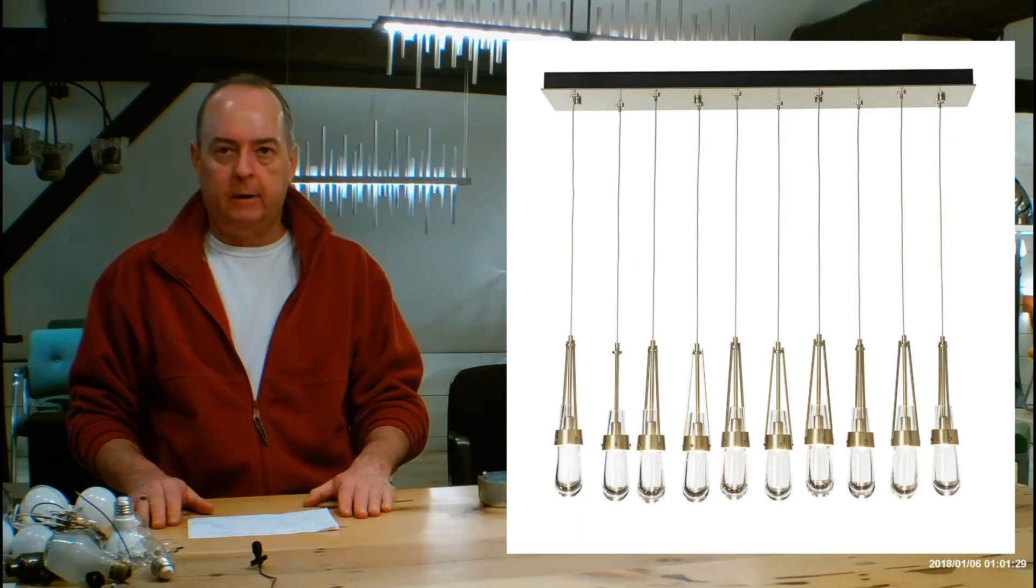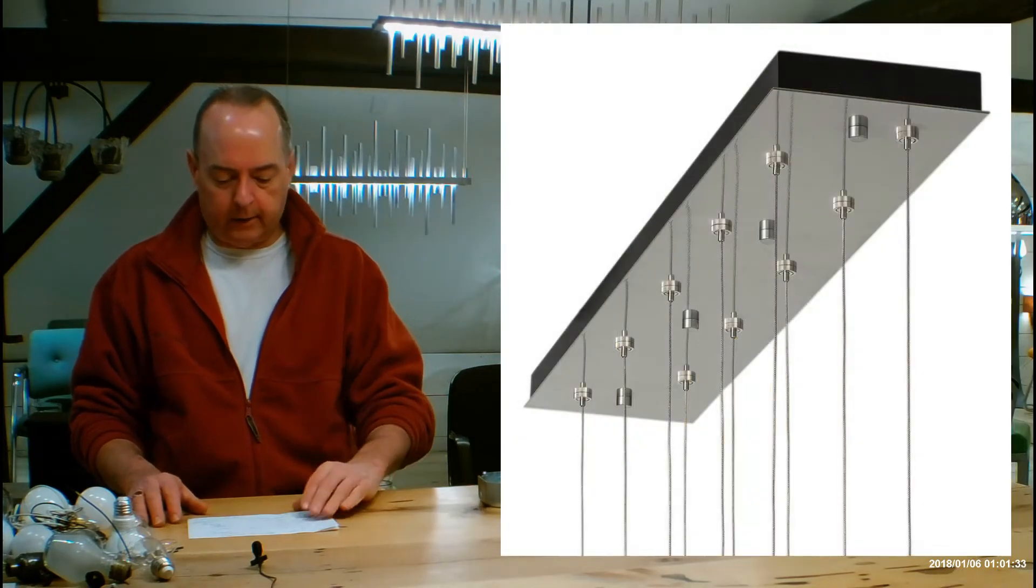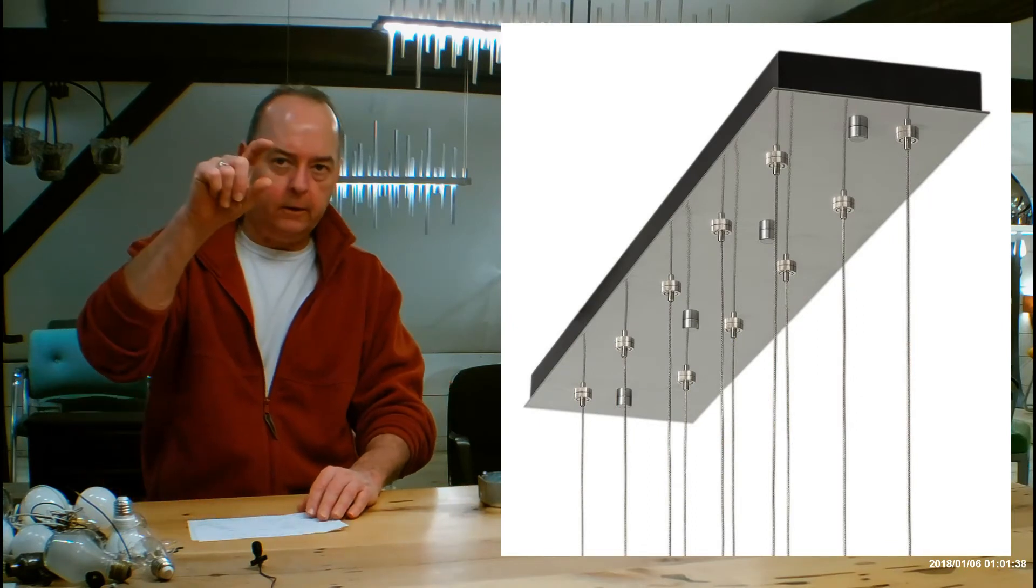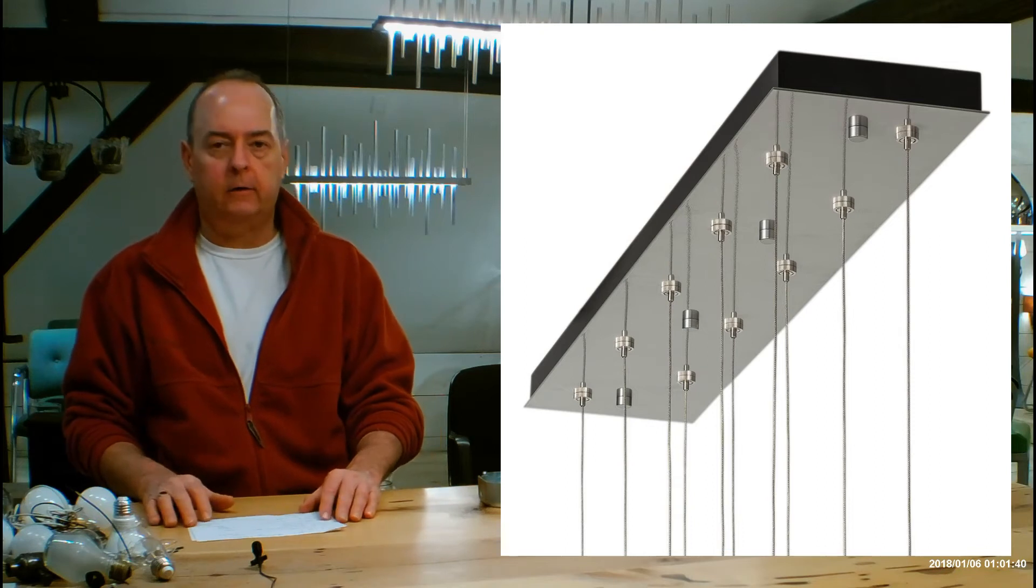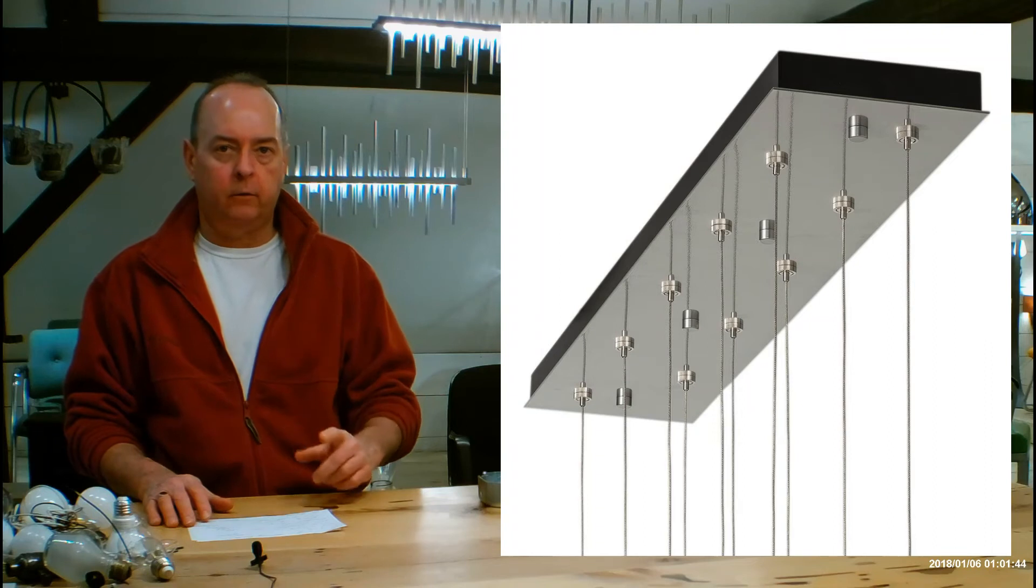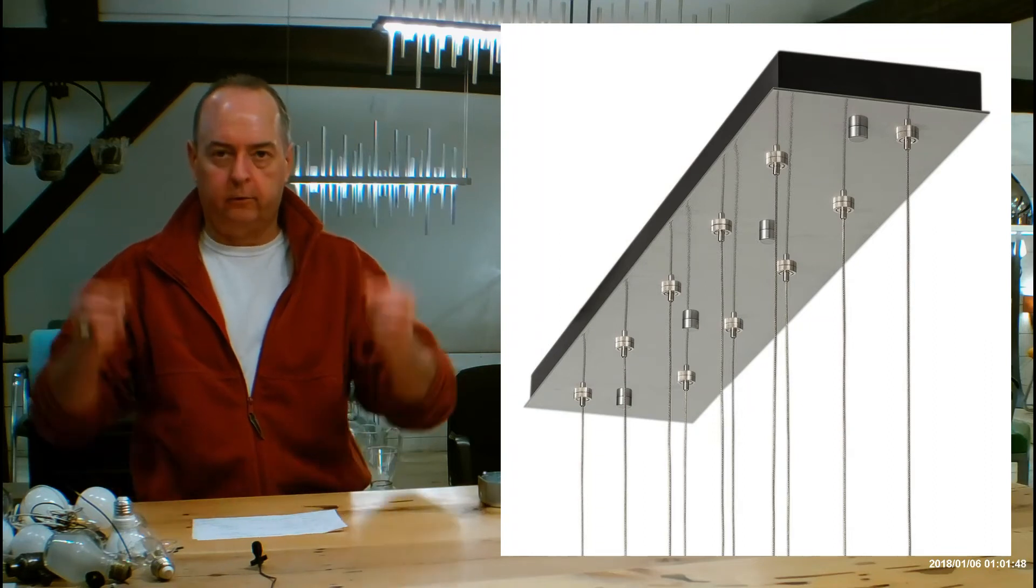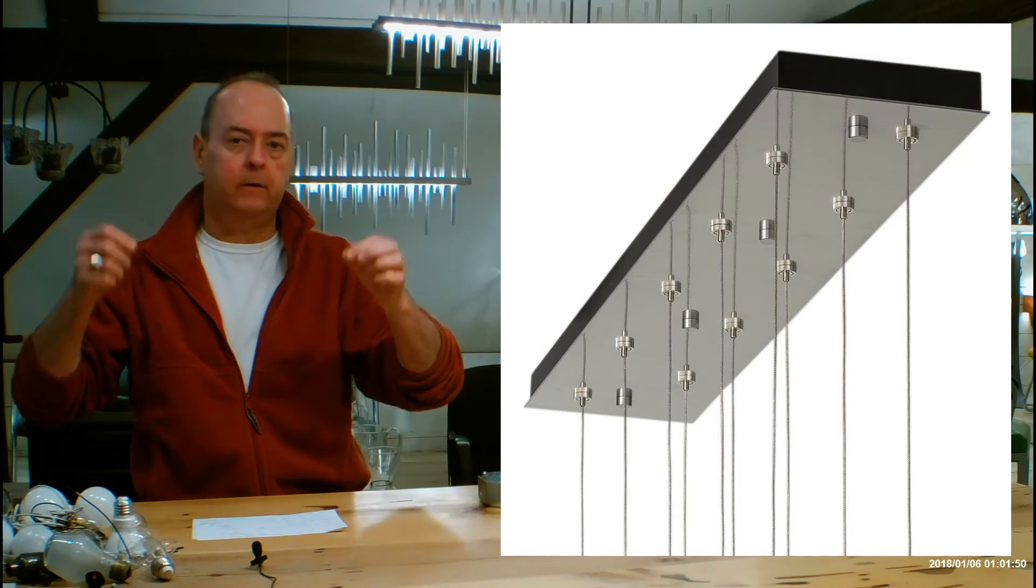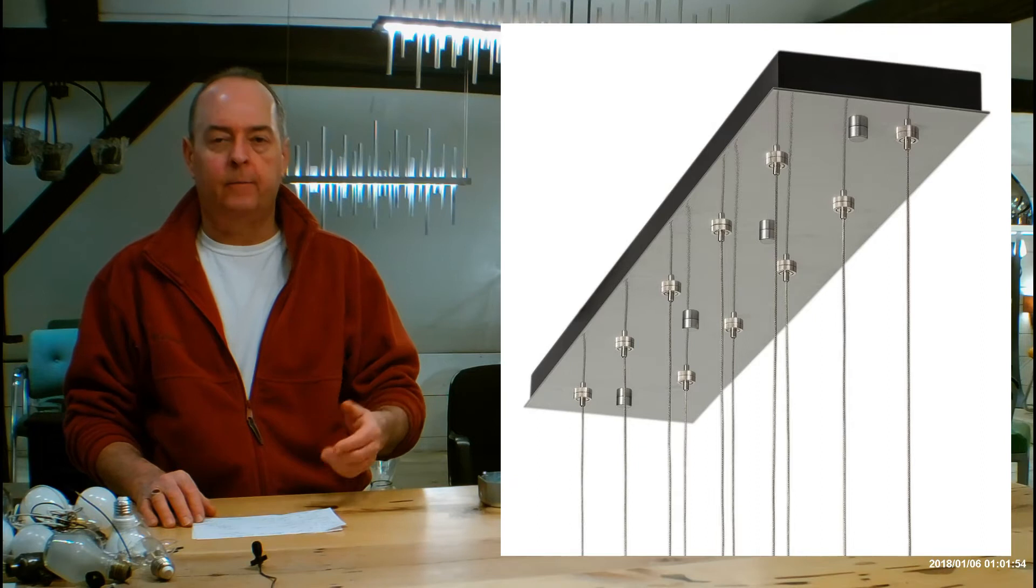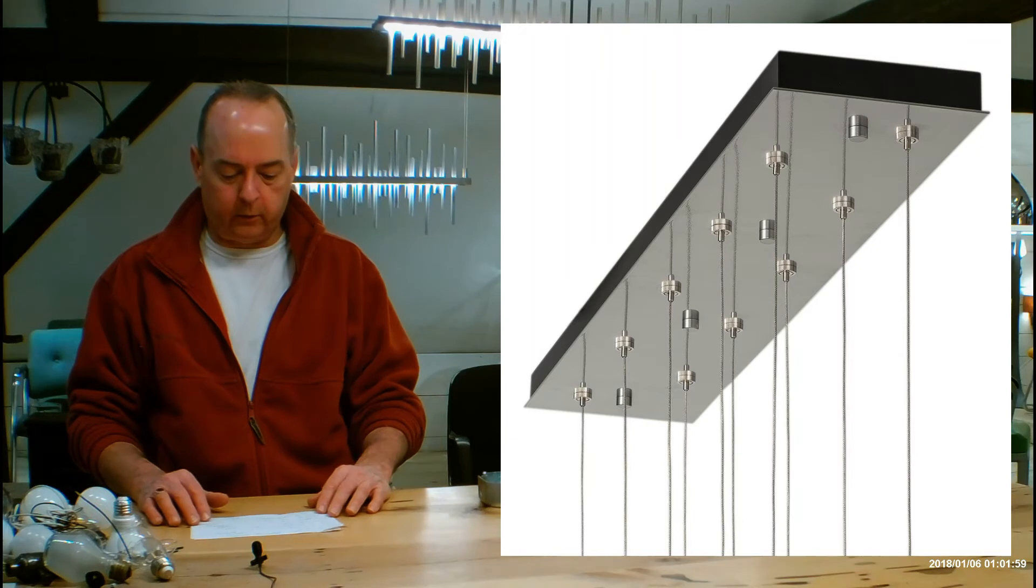Those cables are going up into a canopy on the ceiling. The canopy is 44.5 by 8.5 and is thick because it's got a transformer and driver inside. This takes your line voltage and transforms it down to a low voltage, which goes through the cables safely to the sockets and LEDs. This is a dedicated LED fixture only. You can't use halogens in this.